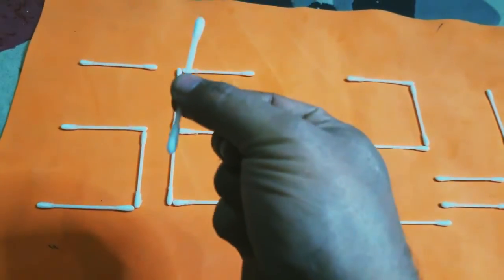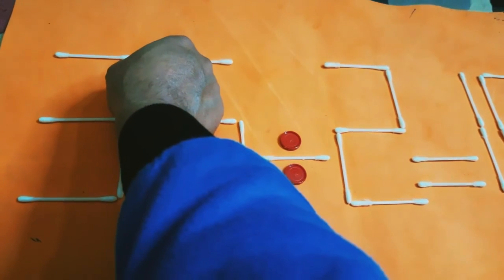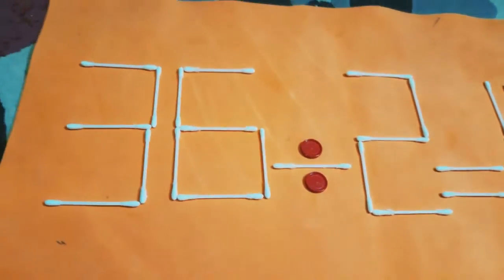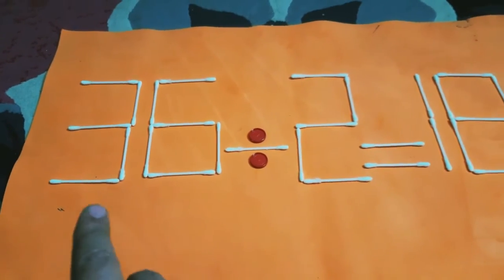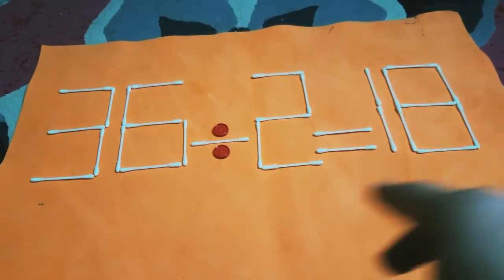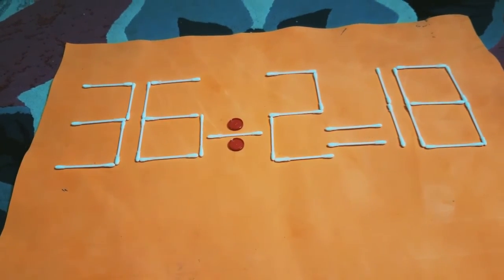Yeah, it's this stick. We move it and put it here. Now we have 36 divided by 2 equals 18. Now it's correct.